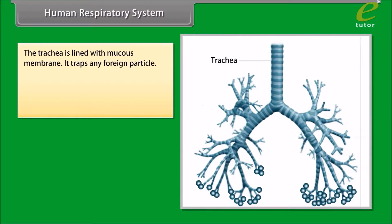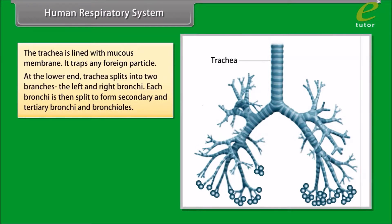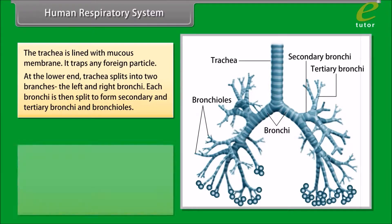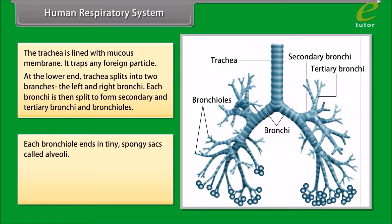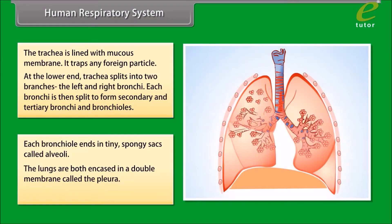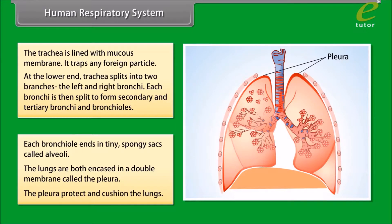The trachea is lined with mucous membrane, which traps any foreign particles. At the lower end, the trachea splits into two branches: the left and right bronchi. Each bronchus then splits to form secondary and tertiary bronchi and bronchioles. Each bronchiole ends in tiny spongy sacs called alveoli. The lungs are encased in a double membrane called the pleura, which protects and cushions the lungs.